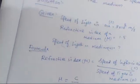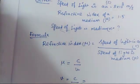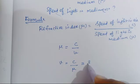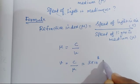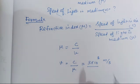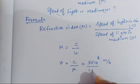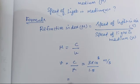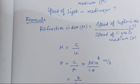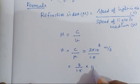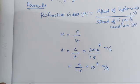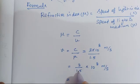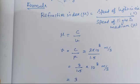Now we substitute the values from the question. C is given and mu is given, so instead of C we substitute 3 into 10 power 8 meter per second, divided by the refractive index 1.5. We can write this as 3 divided by 1.5, into 10 power 8 meter per second. Since 1.5 is a decimal, we multiply both numerator and denominator by 10.